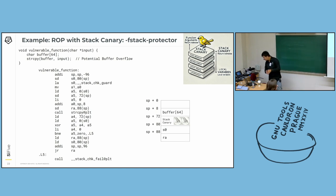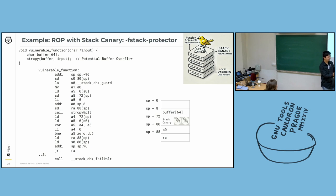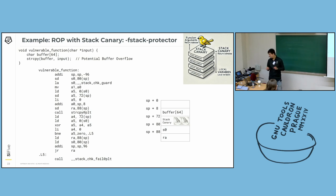If anything is wrong — if it's mismatched — it will call a check fail function and abort the program. How does this prevent stack overwriting? If you overwrite the buffer, you will also corrupt the stack canary in most cases, unless the hacker knows exactly what the stack canary looks like. Otherwise there's a high possibility you'll kill the canary and the program will terminate since we have checked and caught the attack.